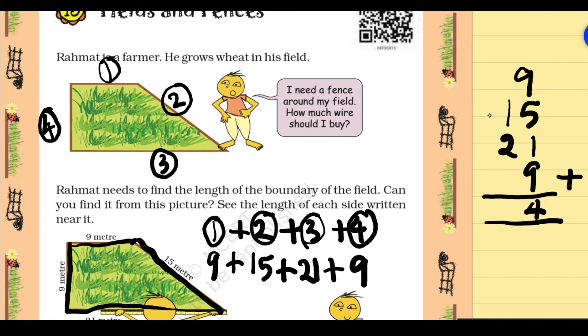So we can write the 1's place number in the 1's place. And the 10's place number is the carryover. So 2 will be the carryover. 2 plus 1 is 3. 3 plus 2 is 5. So the answer is 54 meters.